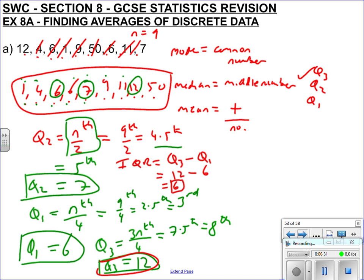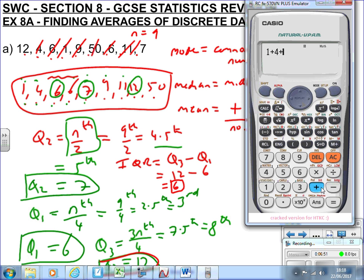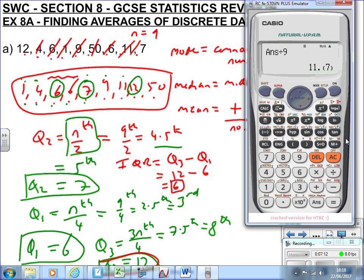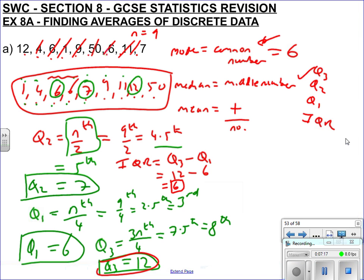So we've done Q2, Q1, Q3, and the interquartile range. The mode is the most common number — we can see that's six. The mean is everything added up divided by how many there are: one plus four plus six plus six plus seven plus nine plus eleven plus twelve plus fifty, divided by nine — that gives 11.7. Notice how the averages are different: the median was seven, the mode was six, and the mean is 11.7. So who do you believe?